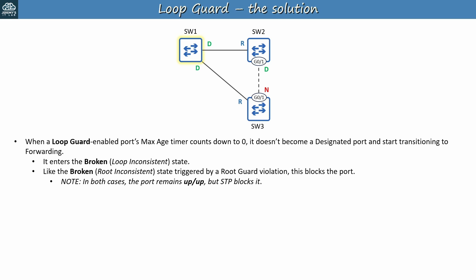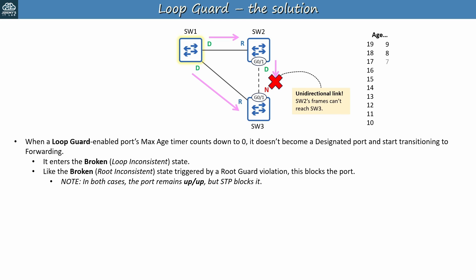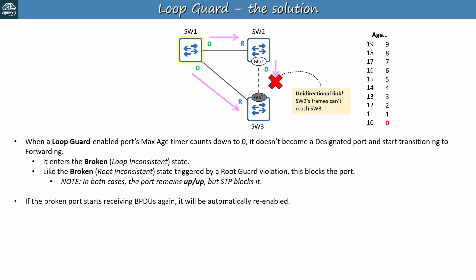So let's say Loop Guard is enabled on SW3 G0-1, and the SW2-SW3 link is unidirectional, preventing SW2's frames from reaching SW3. The max age timer on SW3 G0-1 starts counting down. Normally when it reaches zero it will become a designated port and start transitioning to the forwarding state. But when Loop Guard is enabled, it enters the broken state, preventing a Layer 2 loop from occurring. And like Root Guard, recovery is automatic. If the physical issue is solved and the broken port starts receiving BPDUs again, it will be automatically re-enabled.